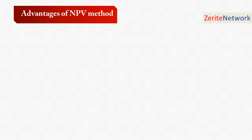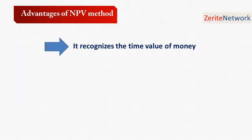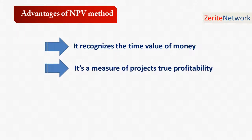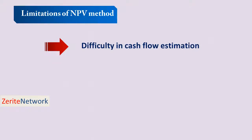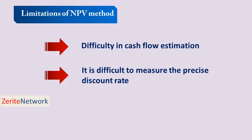NPV has a number of advantages. Number one, it recognizes the time value of money — cash received today is worth more than cash received tomorrow. Number two, it measures a project's true profitability, since it uses cash flows occurring over the entire life of the project. Number three, the NPV method is always consistent with the objective of shareholders' value maximization. The challenges, however, are difficulty in cash flow estimation — in practice it's difficult to obtain cash flow estimates due to uncertainty — and number two, it is difficult to measure the precise discount rate.